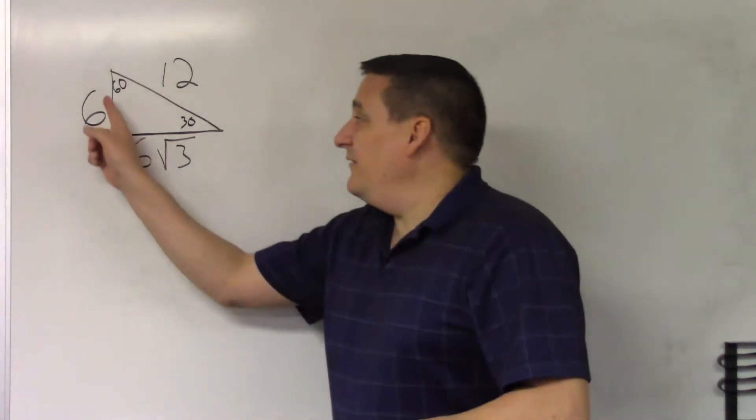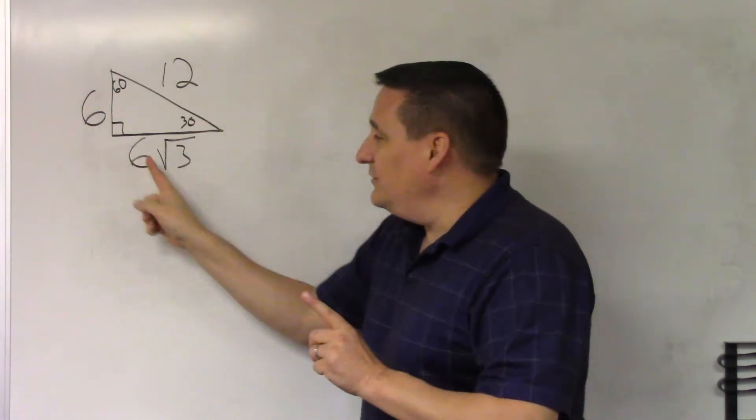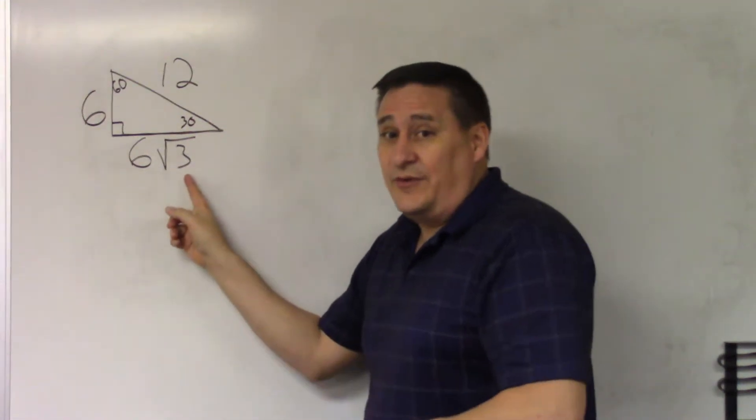Memorizing in four words. Whatever the value of the short side, which is opposite the 30 degrees, double that for the hypotenuse. Take that short side value times the triangle special value of root 3 for the long side.